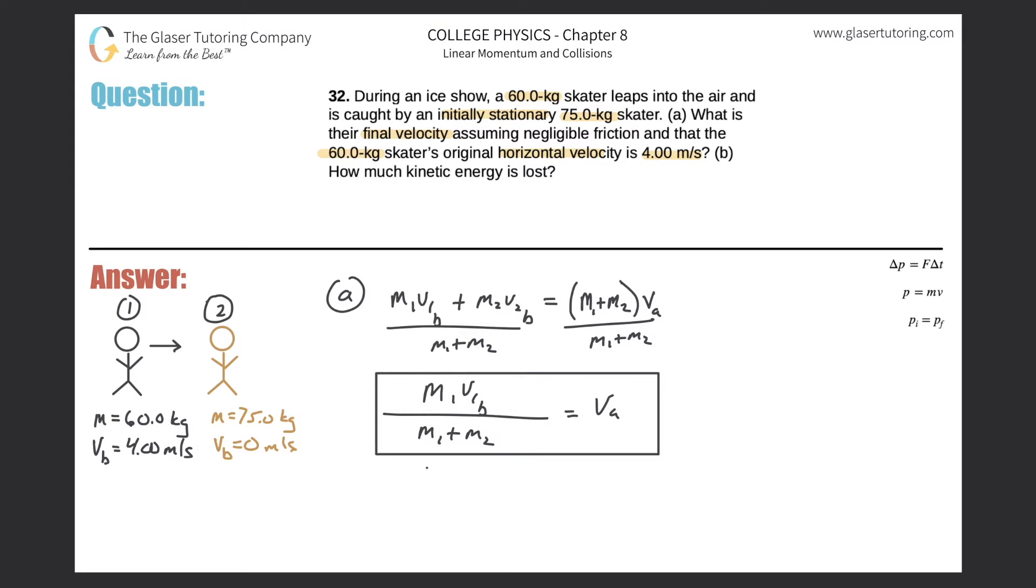So the mass of the first object is 60 kilograms. The velocity of that first object, I'm talking about it moving to the right, and therefore it's a positive 4 meters per second, divided by then the mass of that first object, which was 60 kilograms, plus then the mass of the second object, which was 75 kilograms. And that's equal to the velocity after the collision.